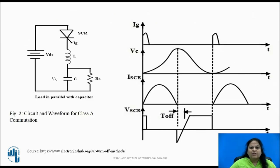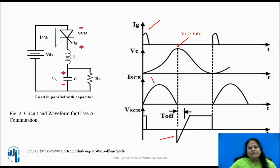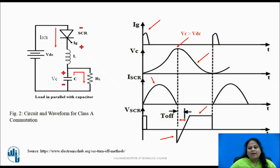The figure shows the circuit and waveform for class A commutation. When the SCR is triggered, the forward current starts flowing through it and the capacitor charges in the direction as shown. Once the capacitor is fully charged — more than the supply voltage — the SCR becomes reverse biased. After the turn off time, the SCR turns off and acts as an open switch, and all the supply voltage now appears across the SCR. The capacitor then discharges through the load resistance and makes the circuit ready for the next operation. The switch off time of the SCR depends on the resonant frequency, which in turn depends on the L and C components. This method is simple and reliable.